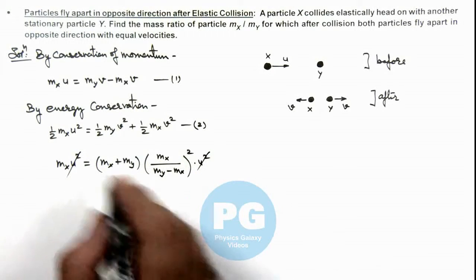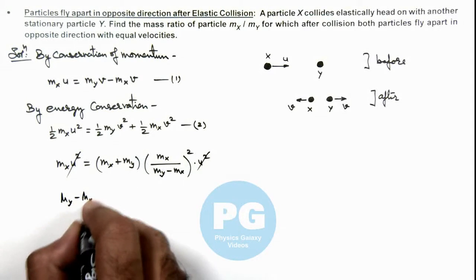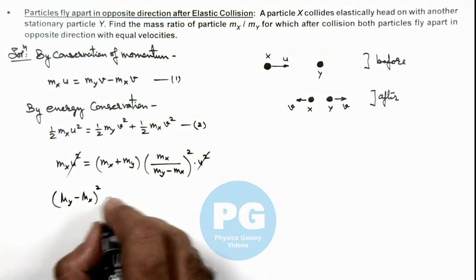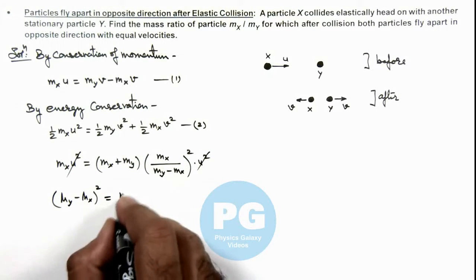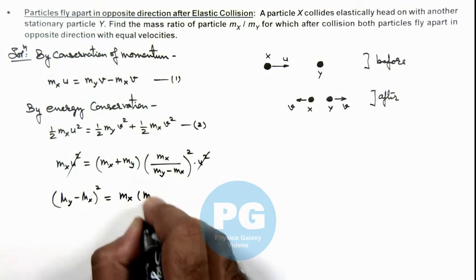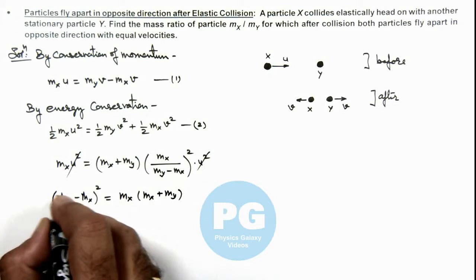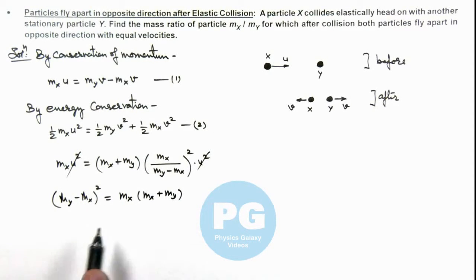On simplifying this relation we'll be getting my minus mx whole square is equal to mx times mx plus my. Here all of these are same mx and my, so on further simplifying this relation we'll be getting...